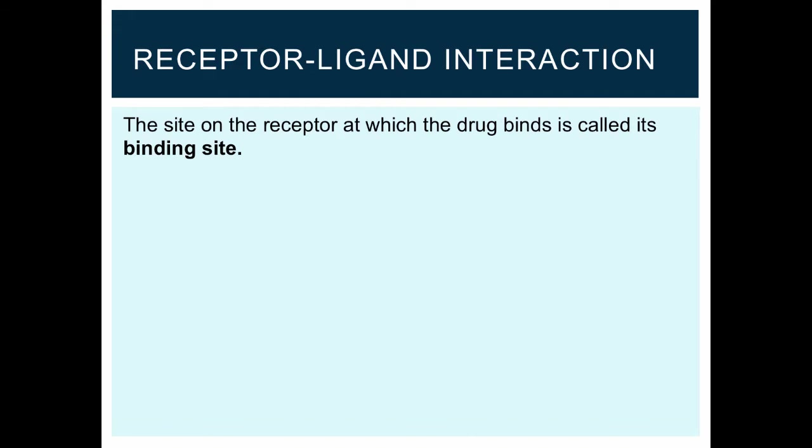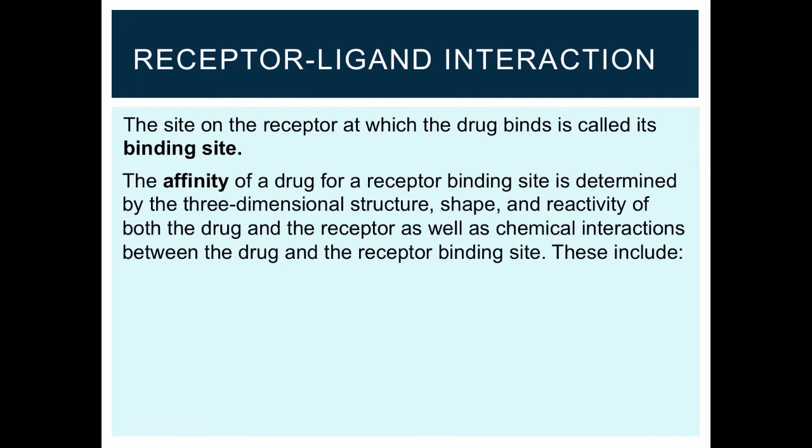The receptor-ligand interaction is driven by the interaction of a drug with the receptor at the binding site. The affinity for which the drug binds to the receptor is determined by several factors, including the three-dimensional structure of the drug, the shape of the receptor, and the reactivity of both the drug and the receptor, as well as chemical interactions between the drug and the receptor binding site. Affinity can really be thought of as the probability of a drug occupying a receptor at any given moment.